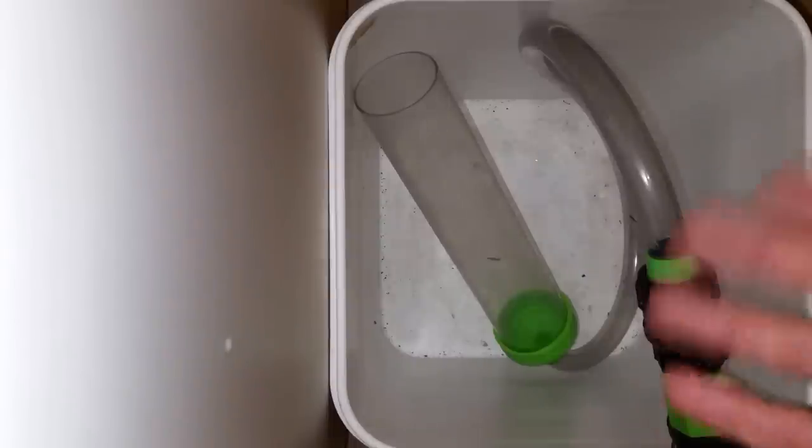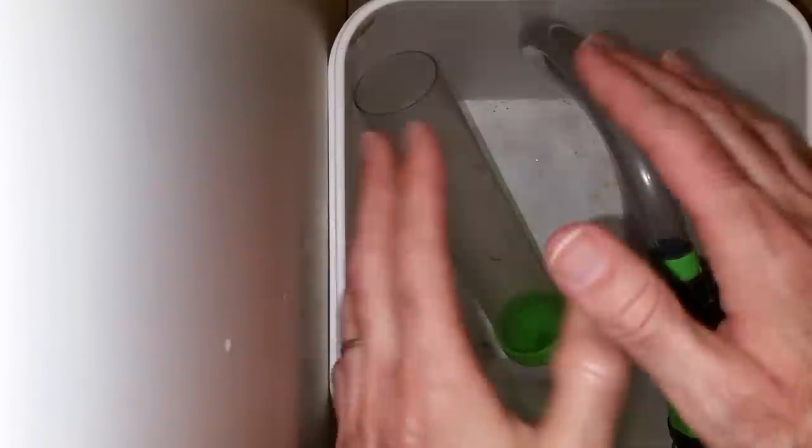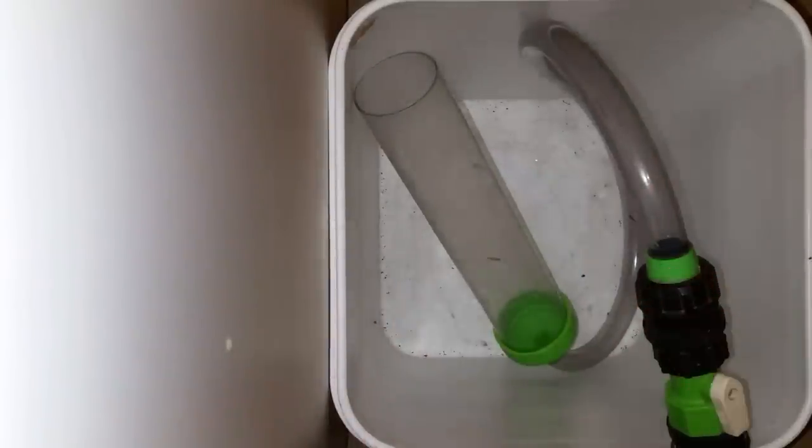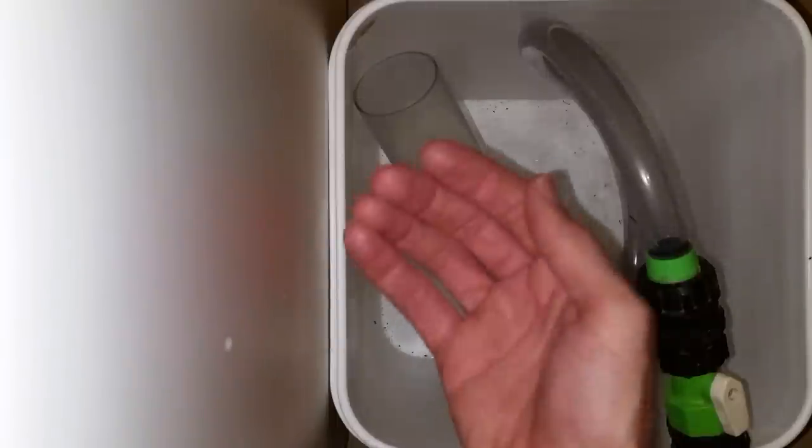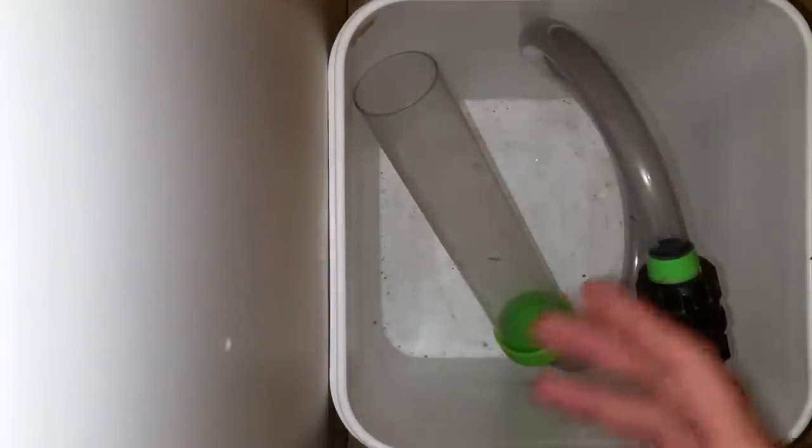So first of all, this is a python. Basically it's a gravel siphon. You can get this from a bunch of different companies. So basically, if you imagine this bucket is a fish tank, right, you'll notice that I have it angled up and I've set it into the corner so it's mechanically stable. Why am I doing that?